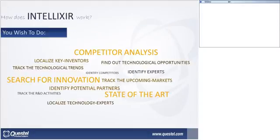Intellixier was developed in France at a national centre of atomic energy for information professionals. The aim was to use statistical analysis to extract relevant documents faster from the growing amount of patents and scientific literature. Our users are mainly information professionals, IP consultants, IP searchers, and more rarely patent attorneys.